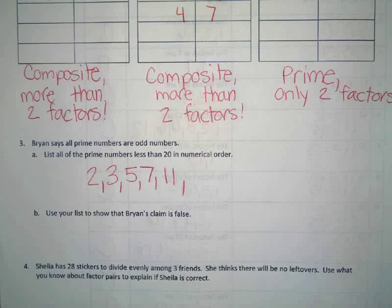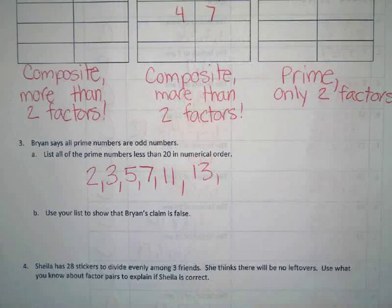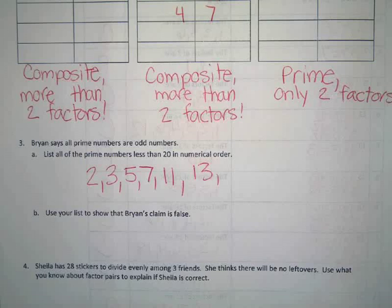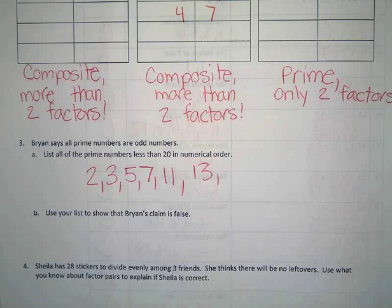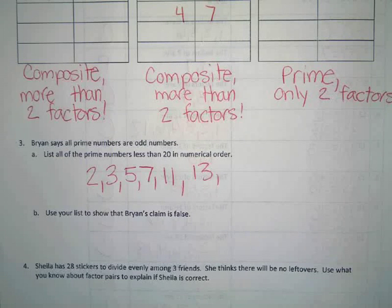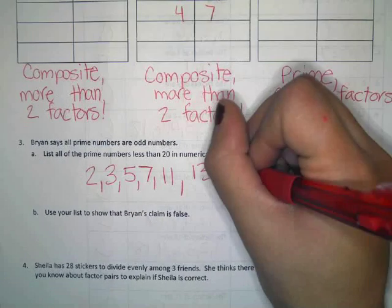13? Yes, it is prime. 14? Nope, because we can do 2 and 7. 15? No — what factors does it have besides 1 and 15? 3 and 5. 16? No, we can multiply that by a bunch of other numbers. 17? Brendan thinks it is prime because 5 times 3 is 15, 5 times 4 is 20 — you're not going to get 17. So 17 is prime. What about 7 times 2? That's 14.